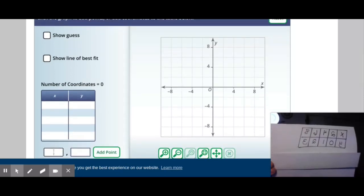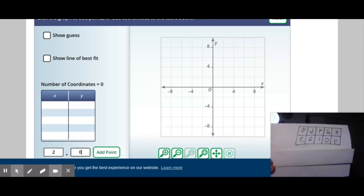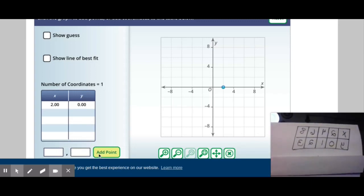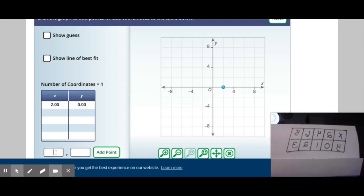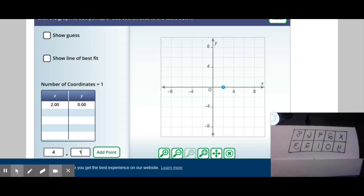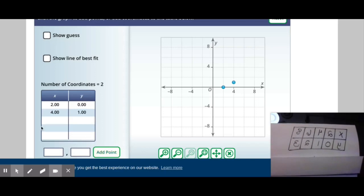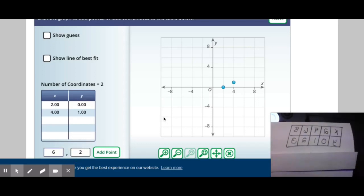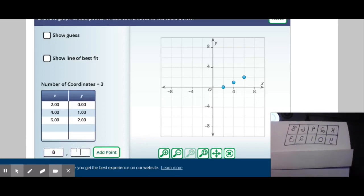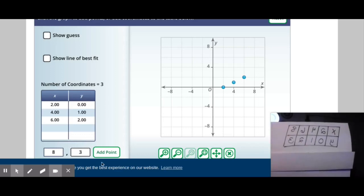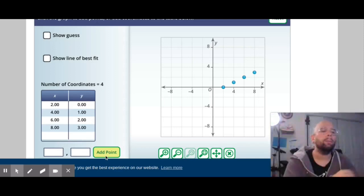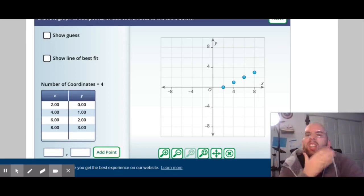So I'm going to type those points in. I'm going to go to my add point and I'm going to type all of those in. I have two zero add point, a little bit closer I have four one add point, I have six two add point, and I have eight three add point.